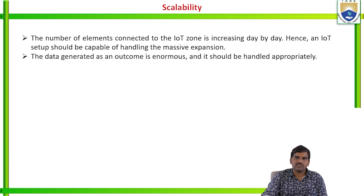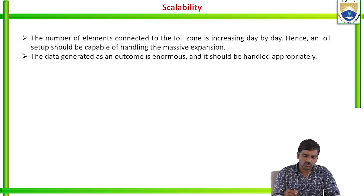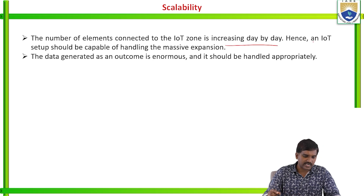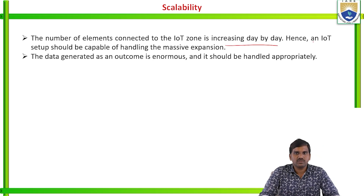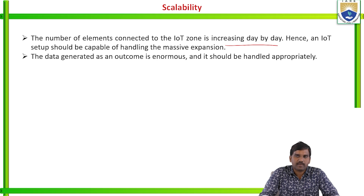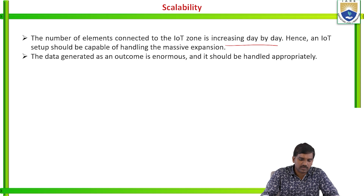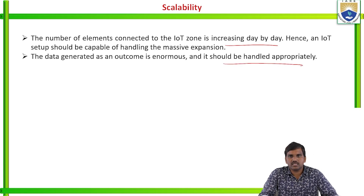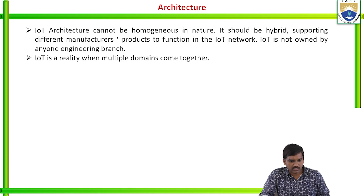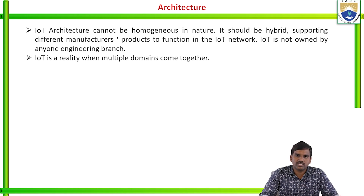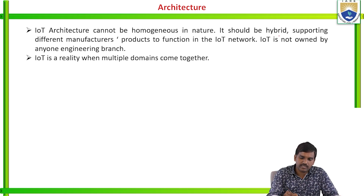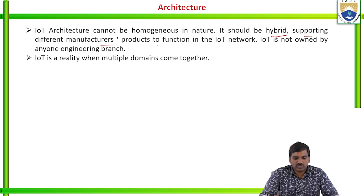Scalability: the number of elements connected to the IoT zone is increasing day by day. Hence, an IoT setup should be capable of handling massive expansion. The data generated as an outcome is enormous and should be handled appropriately. Architecture: an IoT architecture cannot be homogeneous in nature. IoT should be hybrid, supporting different manufacturers' products to function in the IoT network.